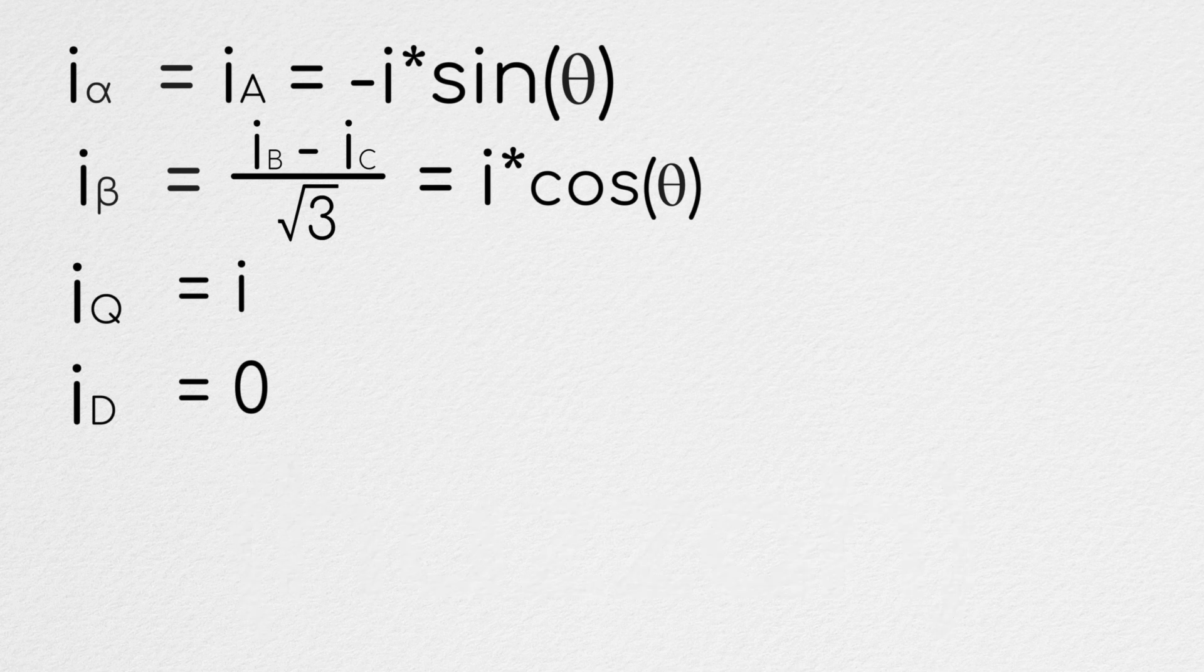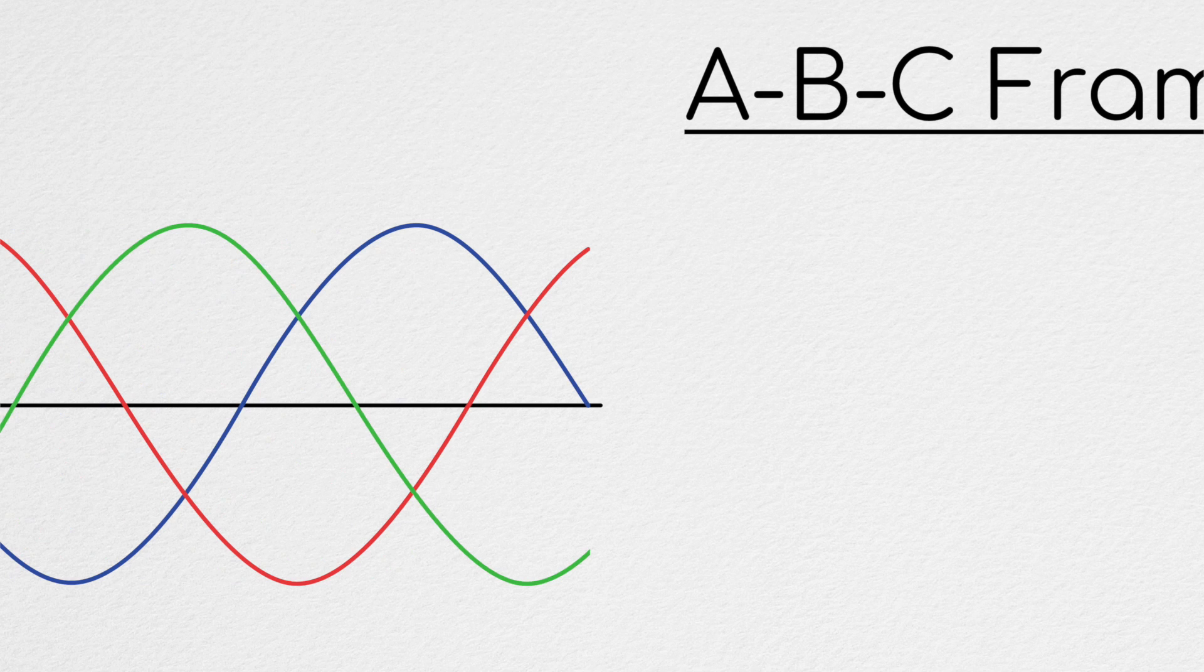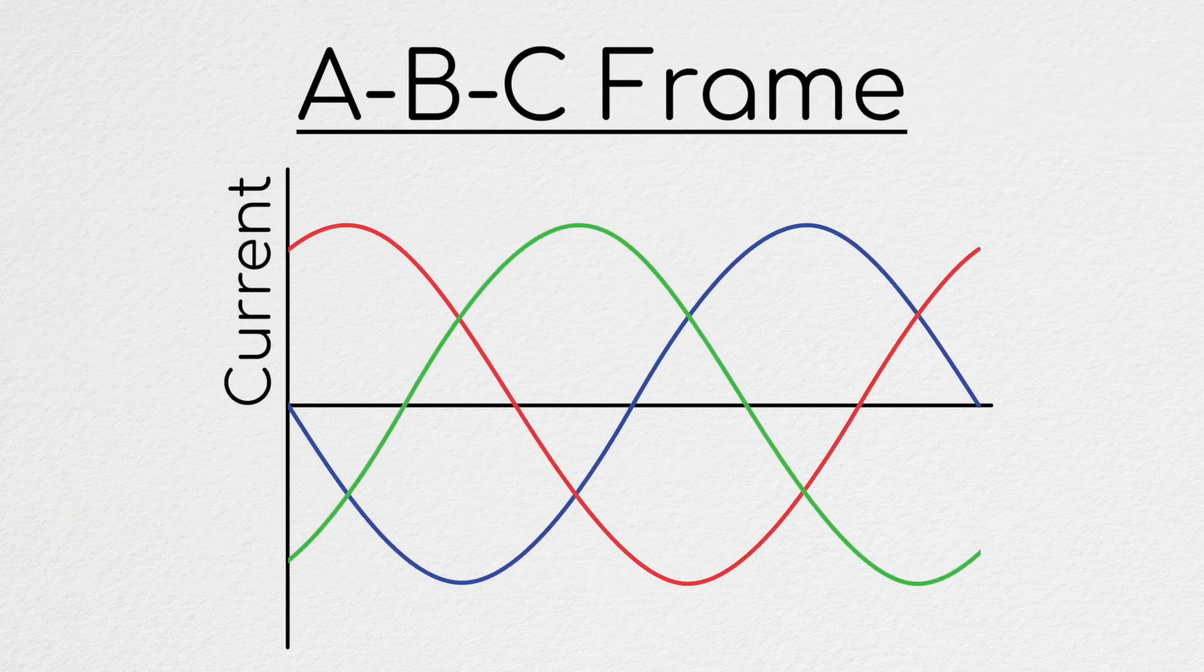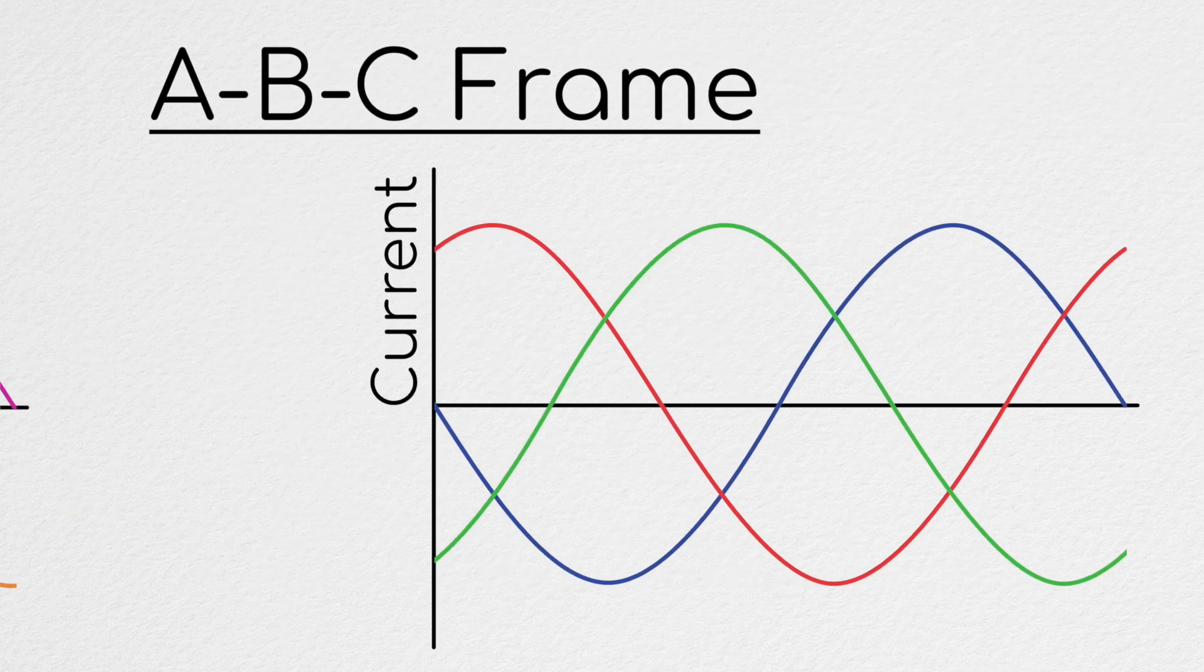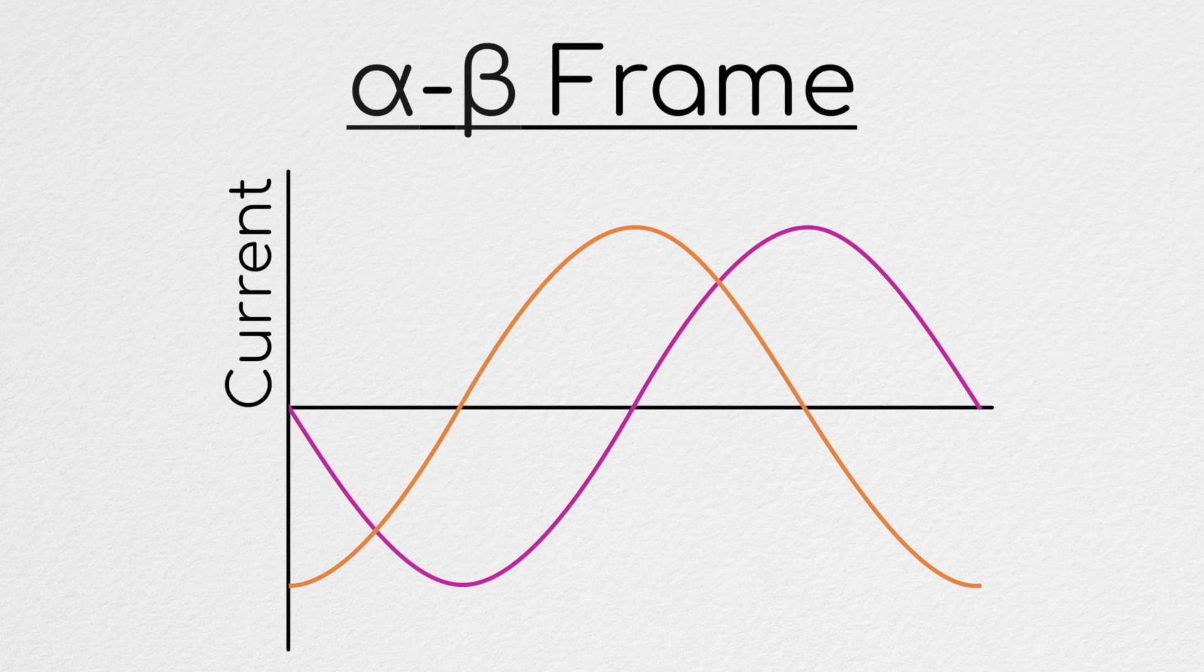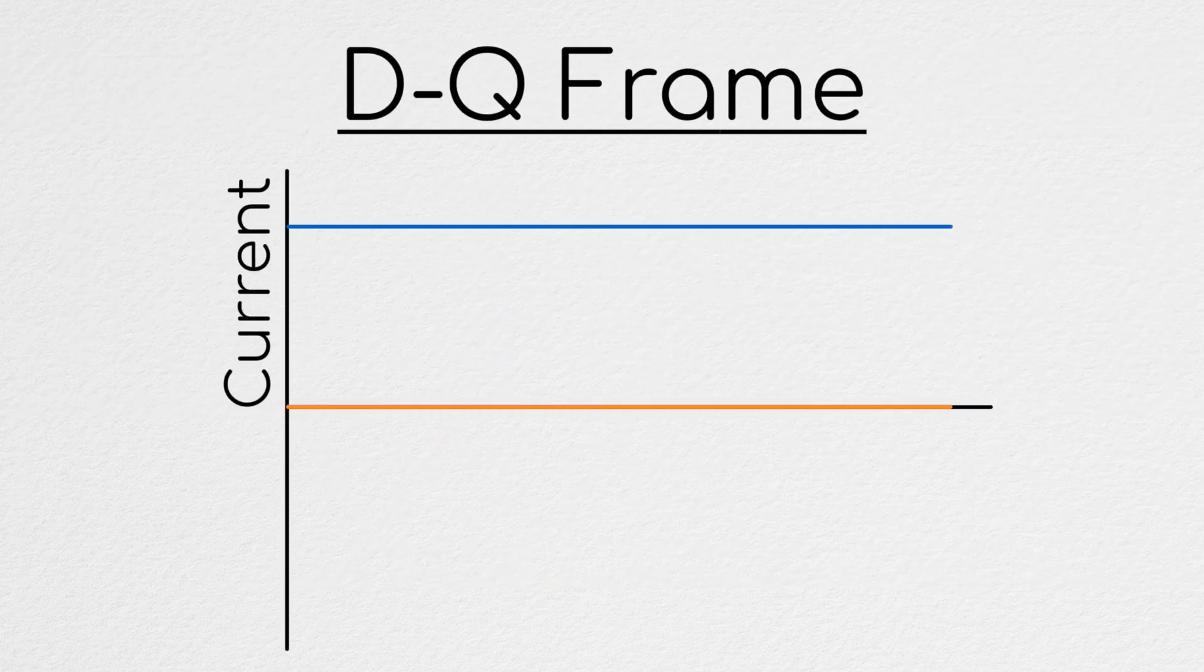So if we went back and plotted our current in each of our three reference frames, this is what our current would look like in the ABC frame. And then moving to the alpha beta frame, we would have this. Finally, in the dq axis, our currents are constant and look like this.